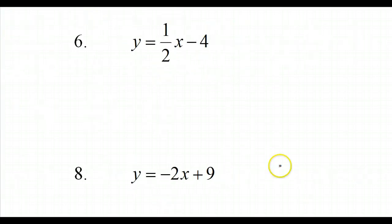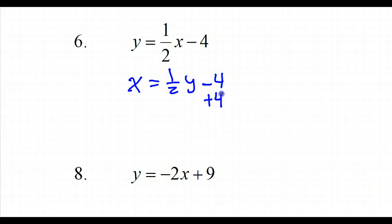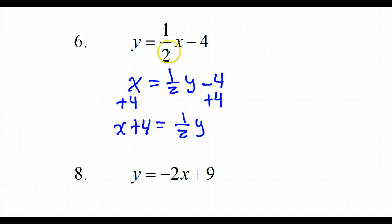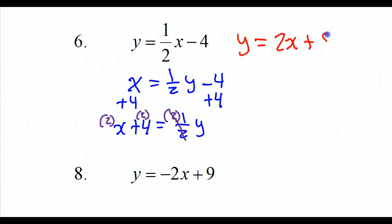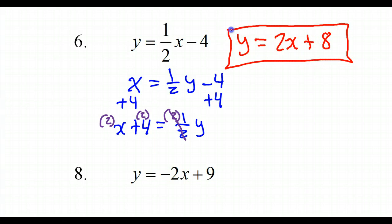Example 6: switch x and y and solve for y. So this will be x equals 1/2 y minus 4. Add 4 to both sides: x plus 4 equals 1/2 y. Seeing that denominator of 2, it's easy to multiply everything by 2 — those cancel out, and 1y is just y. The final answer is y equals 2x plus 8. That is the inverse for number 6.